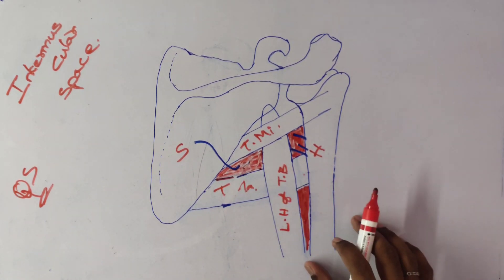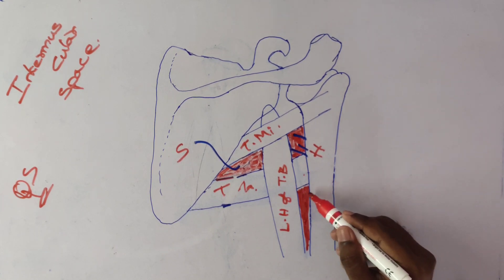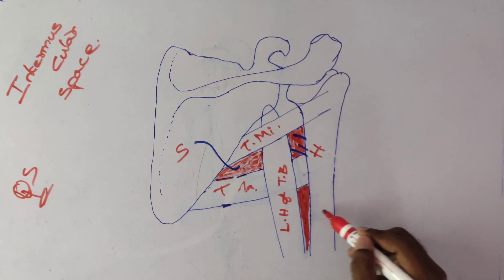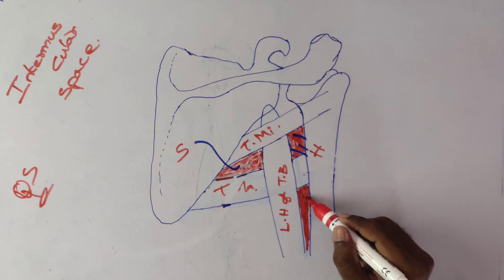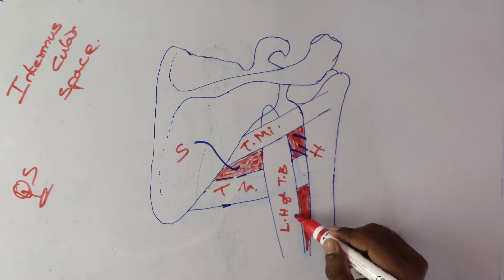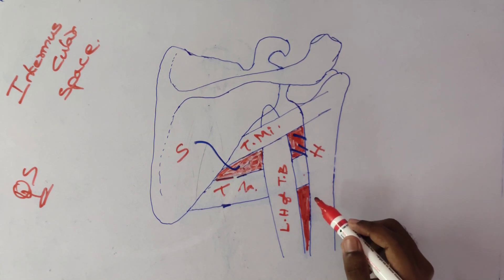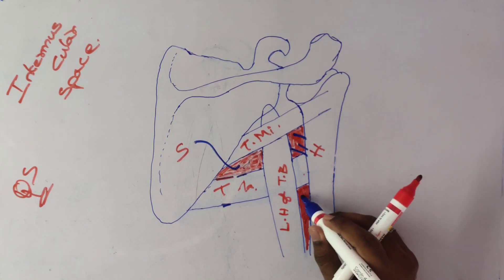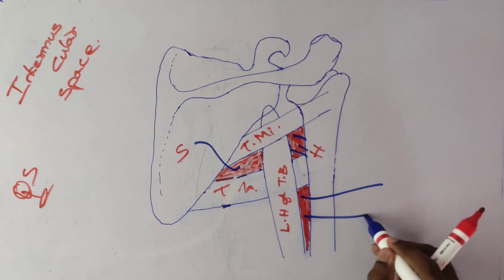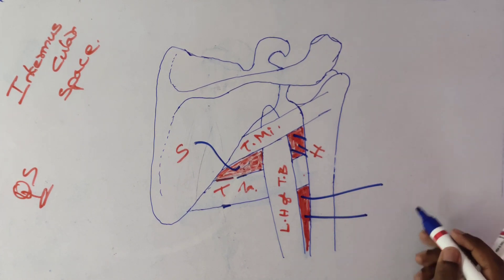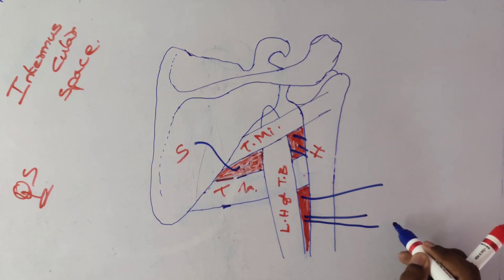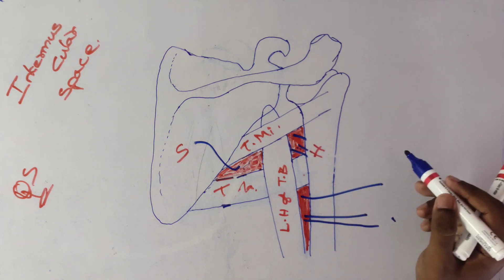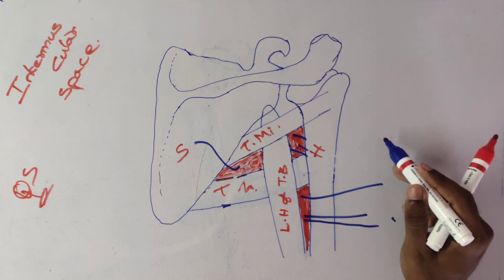In the lower triangular space, the boundaries are: at the superior surface, the lower border of teres major muscle; at the lateral surface, the humerus; and at the medial surface, the long head of triceps brachii. The contents present in the lower triangular space are the radial nerve and the profunda brachii vessels — both the profunda brachii artery and vein.